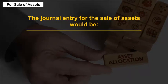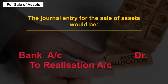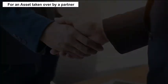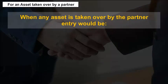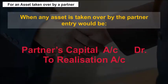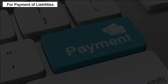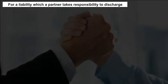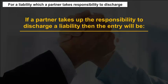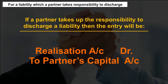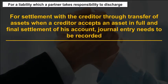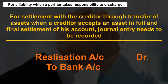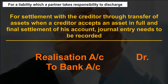For sale of assets, the journal entry for the sale of assets is recorded accordingly. For an asset taken over by a partner, when any asset is taken over by a partner, the entry is recorded in the partner's capital account. For payment of liabilities, the appropriate entry is made. For a liability which a partner takes responsibility to discharge, the entry is recorded against the partner's capital account. For settlement with a creditor through transfer of assets, when a creditor accepts an asset in full and final settlement of his account, the journal entry needs to be recorded.